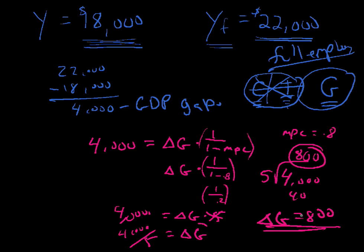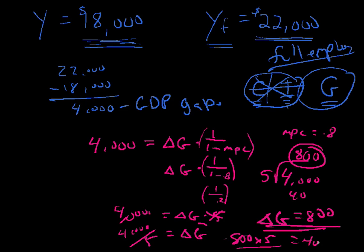In this case, 800 times 5 is going to equal, oh, there's the multiplier, 1 divided by 0.2 is 5. 800 times 5 is going to equal $4,000. So if you think about it, 800 government spending times 5, the multiplier equals $4,000, and we're back to full employment. That's the concept. And remember what that multiplier is.